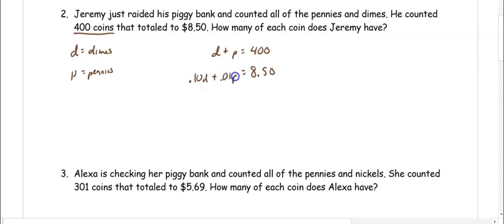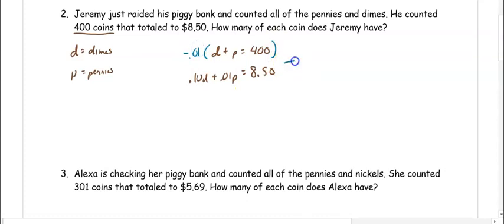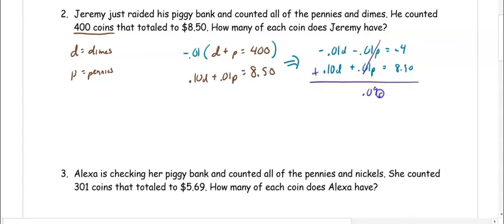So we have 0.10D plus 0.01P equals 8.50. To eliminate a variable, I want to eliminate the P. To cancel out with 0.01, we need negative 0.01. So negative 0.01D minus 0.01P equals negative 4. And then we have 0.10D plus 0.01P equals 8.50. When we add straight down, the P's cancel: 0.09D equals 4.50. When we divide by 0.09, we get D equals 50.